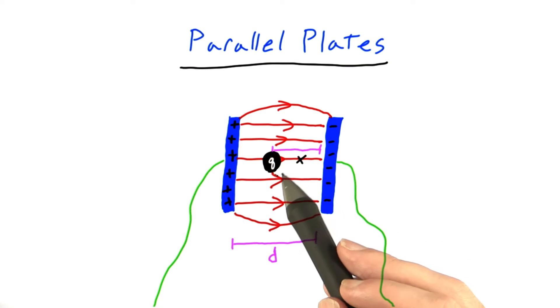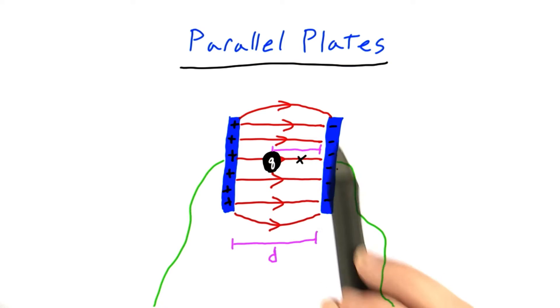Let's imagine that we have some particle with a charge q in the middle of our electric field, and this particle is a distance of x away from this negative plate over here.